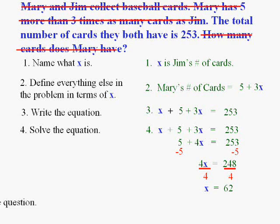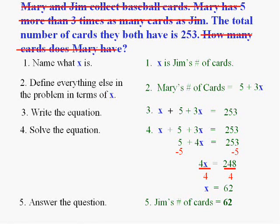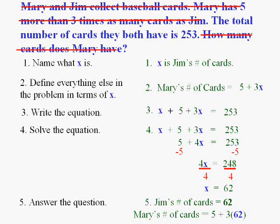Now here's where it's very important to answer what they asked because 62 is not the correct answer. 62, don't get all happy. 62 is Jim's cards. They didn't want to know that. They want to know Mary's cards. So we're going to have to use what we wrote down in step two and say 5 plus 3 times x or 5 plus 3 times 62 and get the answer. Now you've got the answer to the question, how many cards does Mary have? 191.